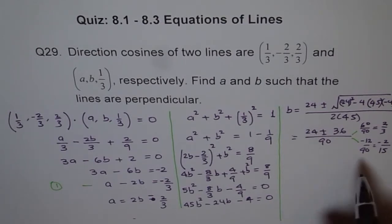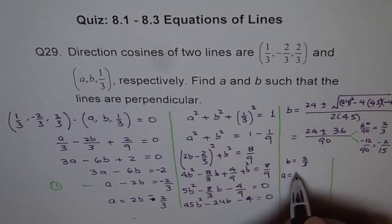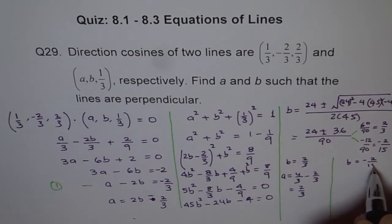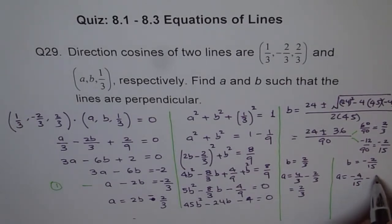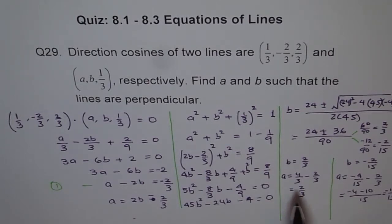Now finding A for each value. If B = 2/3, then A = 2(2/3) - 2/3 = 4/3 - 2/3 = 2/3. If B = -2/15, then A = 2(-2/15) - 2/3 = -4/15 - 10/15 = -14/15. So we have two solution pairs.